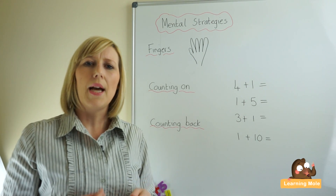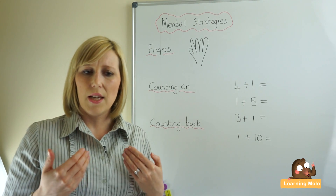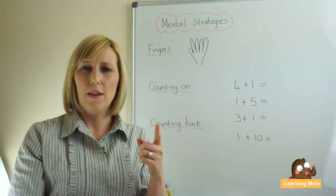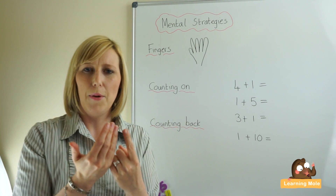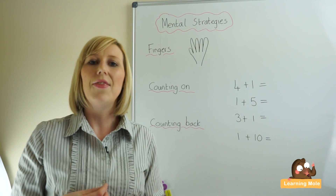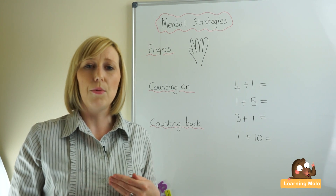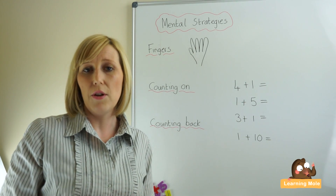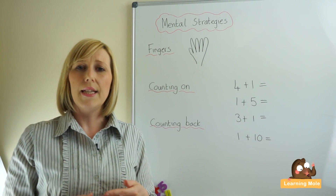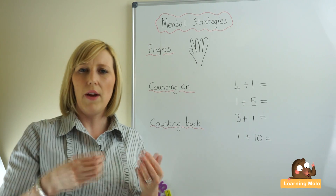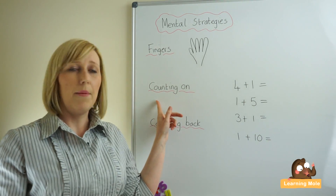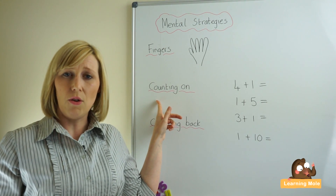Imagining the fingers coming together in their heads and actually starting to visualize that — the more you talk through this with your child the more they will be able to do that. They may still look at their fingers, but they won't be physically counting them out. Looking at their fingers to help them visualize is a really good step to encourage. Once they start to get that idea, they can then move on to the process of counting on.